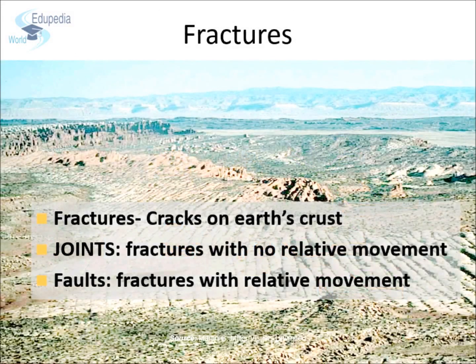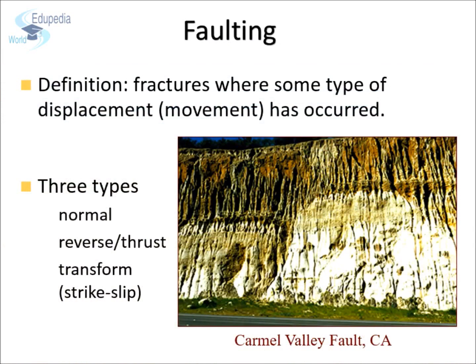All the cracks present on the surface of the Earth's crust are called fractures. Some of these fractures are joints, where there is no relative movement. But if there is relative movement, then these fractures are known as faults. Faults are those fractures where some type of displacement has occurred. There are three types of faults: normal fault, reverse or thrust fault, and transform, i.e., strike-slip fault.